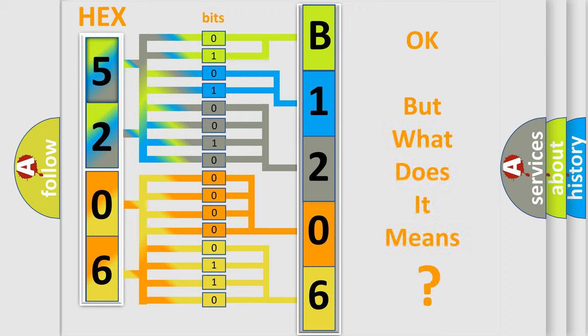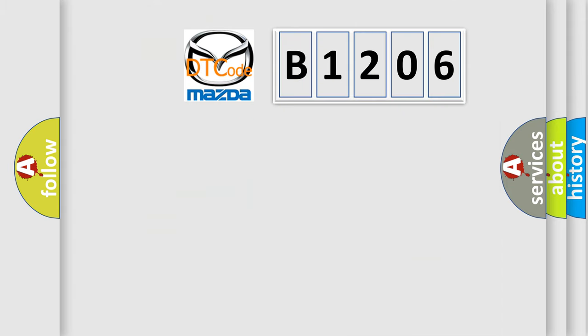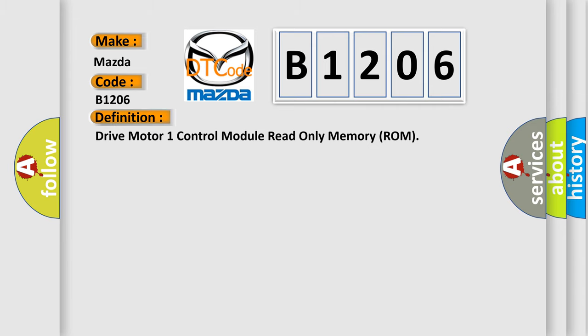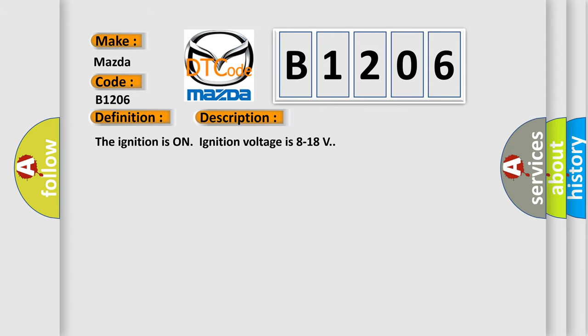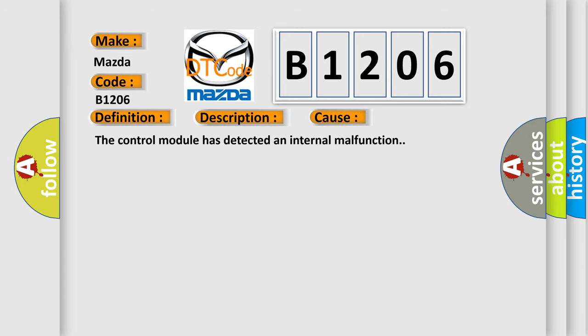We now know in what way the diagnostic tool translates the received information into a more comprehensible format. The number itself does not make sense to us if we cannot assign information about what it actually expresses. So, what does the diagnostic trouble code B1206 interpret specifically? The basic definition is: Drive motor one control module read only memory (ROM). The ignition is on; ignition voltage is 8 to 18 volts. This diagnostic error occurs most often when the control module has detected an internal malfunction.